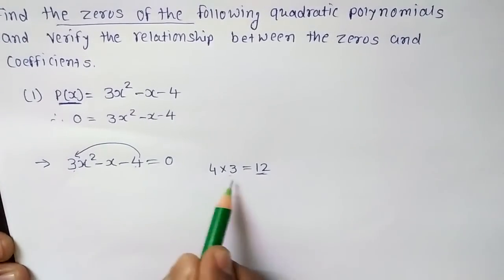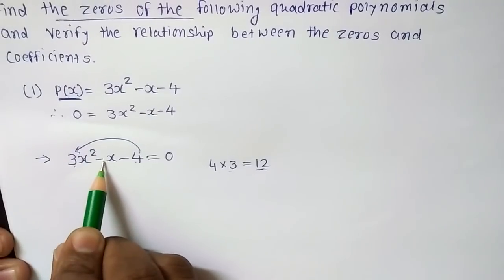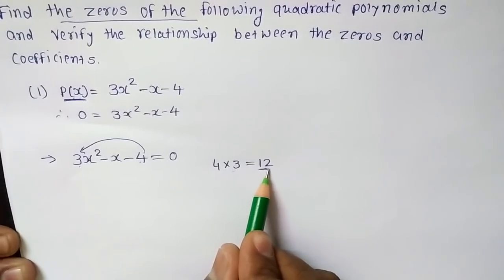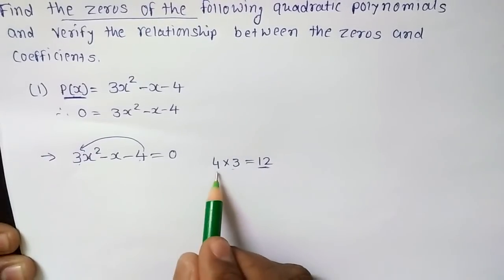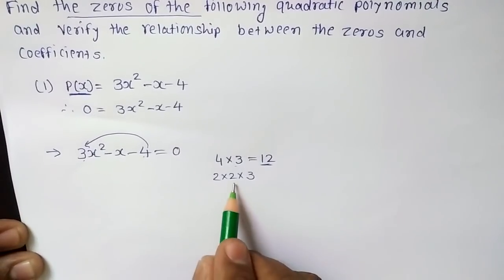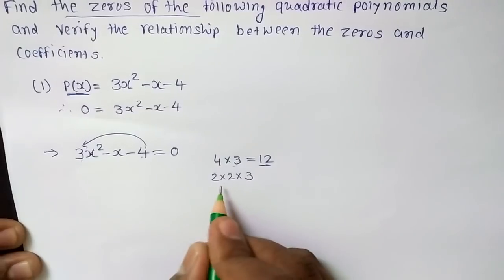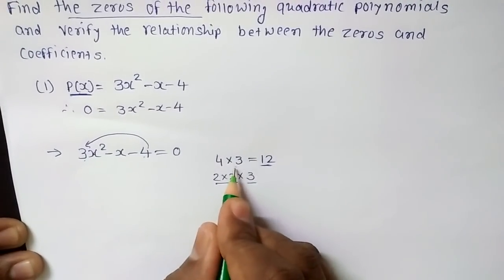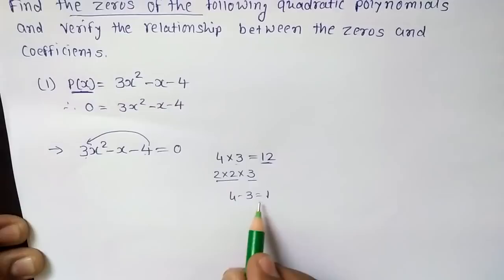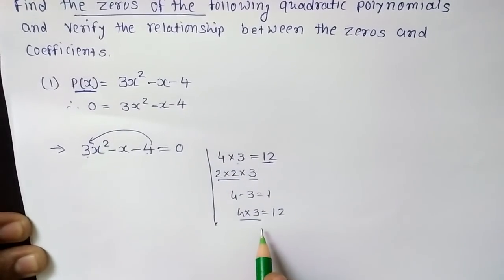We need to subtract both factors and get the coefficient of x, which is 1. The factors of 12 can be written as 2 × 2 × 3. Trying 6 and 2: 6 - 2 = 4, not 1. Trying 4 and 3: 4 - 3 = 1, and 4 × 3 = 12. So 4 and 3 are the required factors.